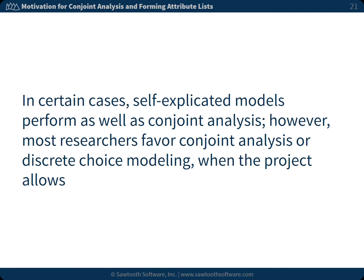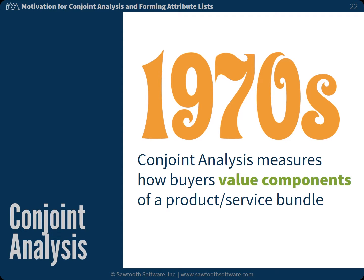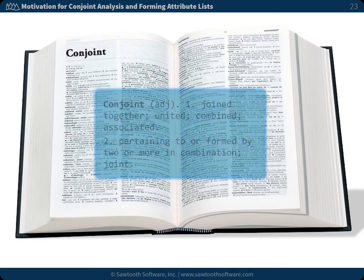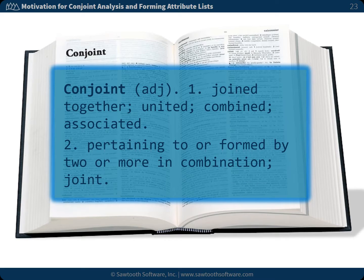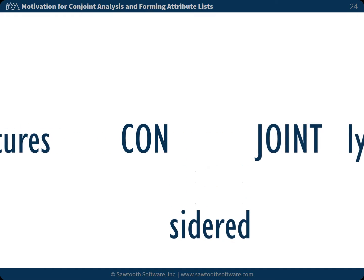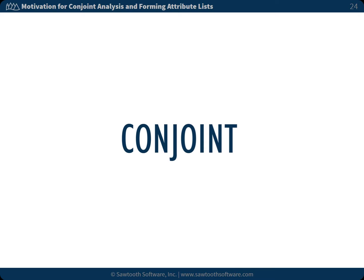So what is conjoint analysis? It is a research technique developed in the early 1970s. It measures how buyers value components of a product or service bundle. The dictionary definition of conjoint is joined together, united, combined, or associated. Marketers sometimes use a catchphrase, features considered jointly — we drop some letters and end up with conjoint.